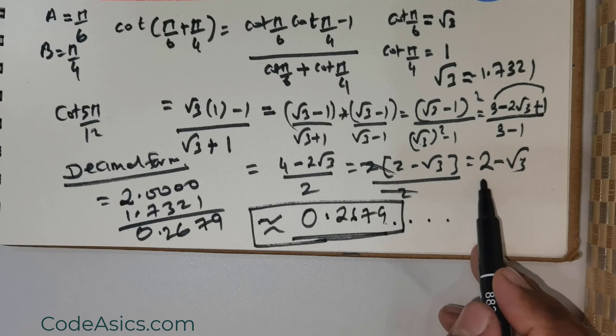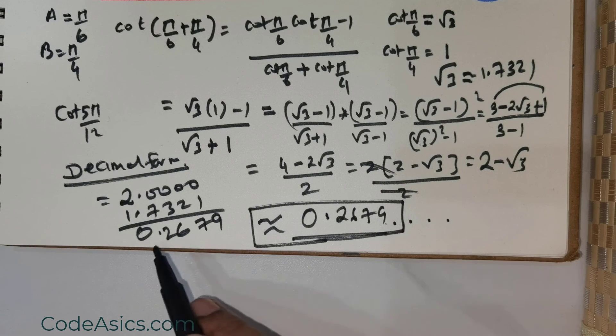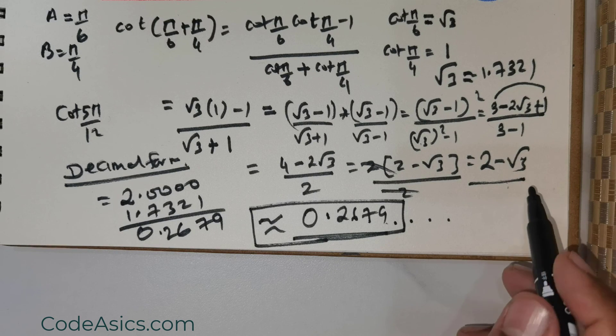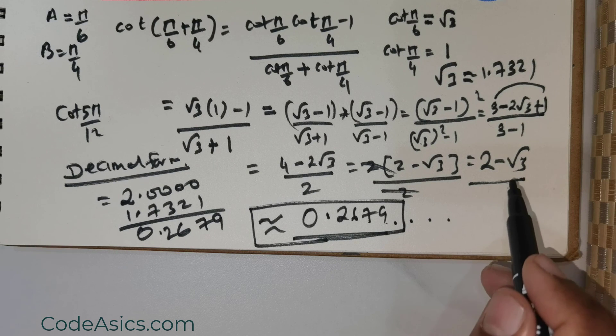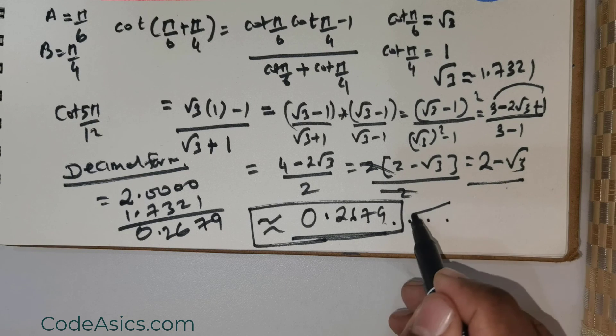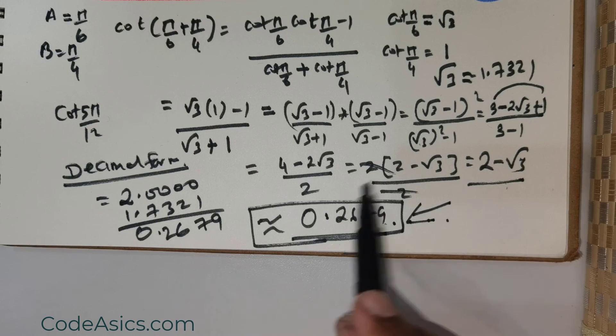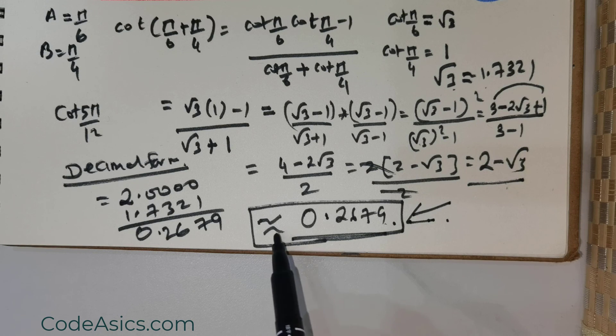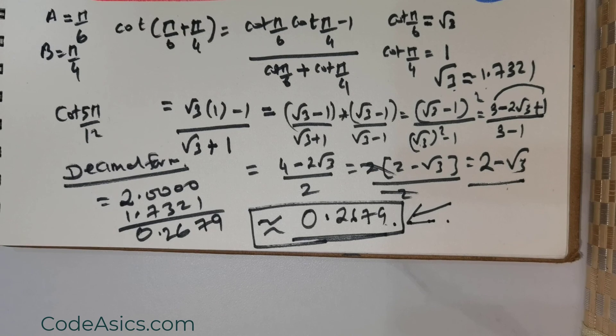So I have shown you two ways: one without the decimal value being involved (2 - √3)—this is a good value to have in the corner of your mind—and if not, taking the value of √3 as 1.7321, you can still achieve a decimal equivalent for cot(5π/12). Thank you students, enjoy your night.